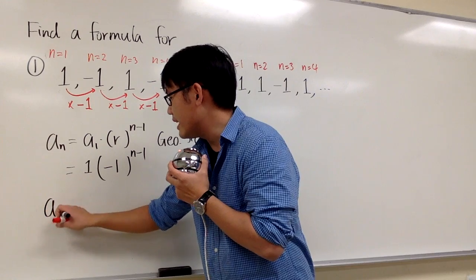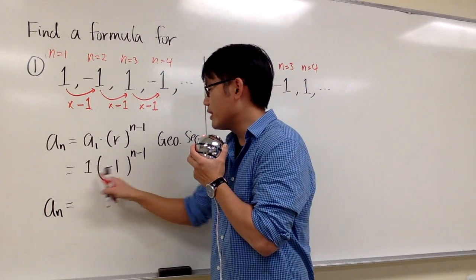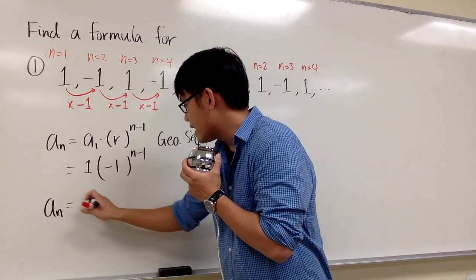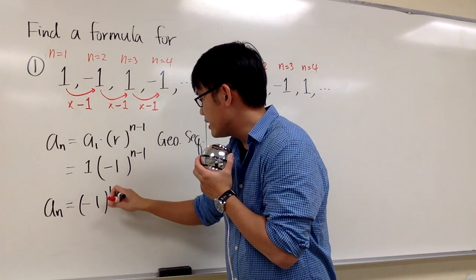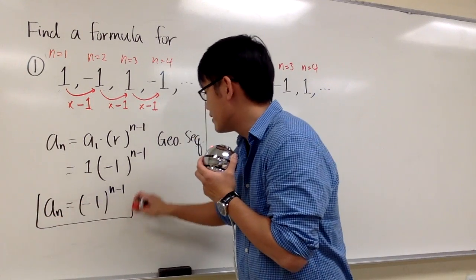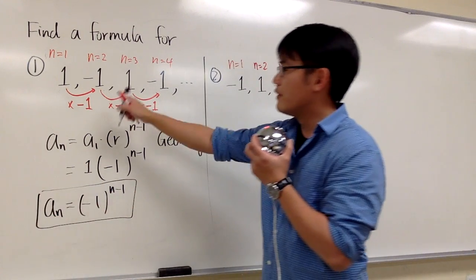I can just write this down as an equals to... We have 1 times anything, the 1 doesn't matter. So we can just write negative 1 in the parentheses raised to the n minus 1 power. And this will take care of it. This right here will be a formula for that.